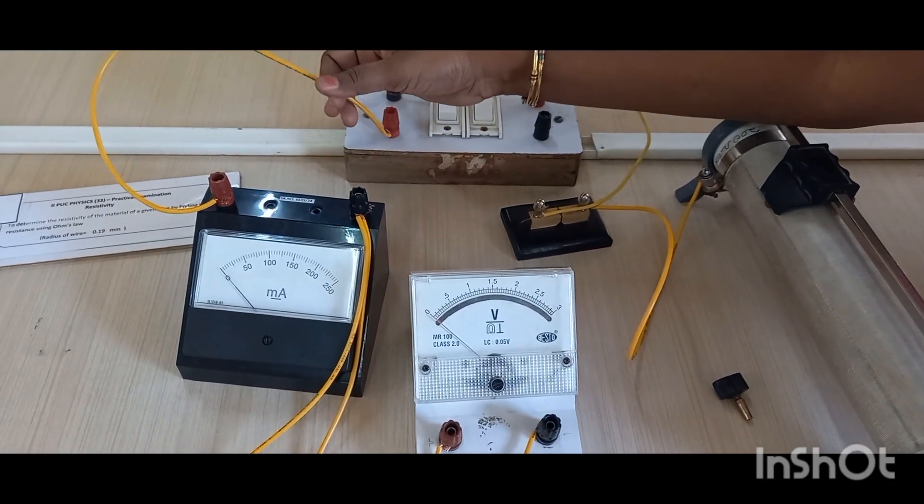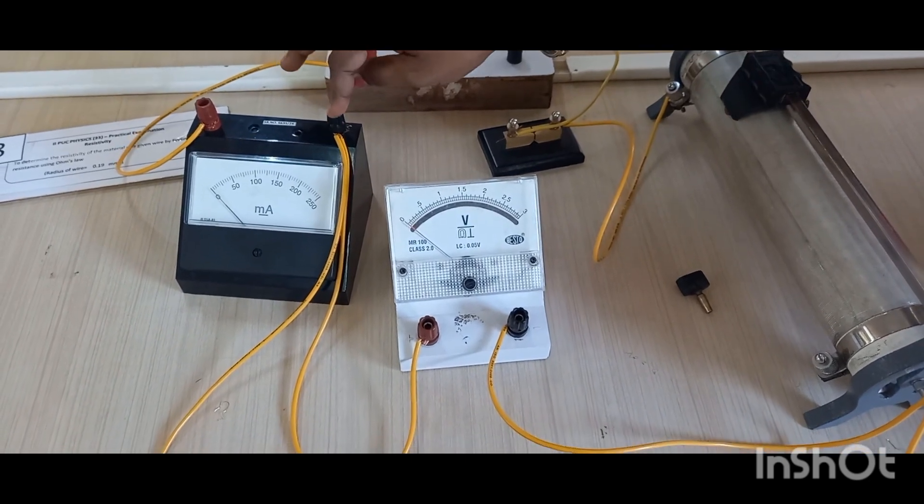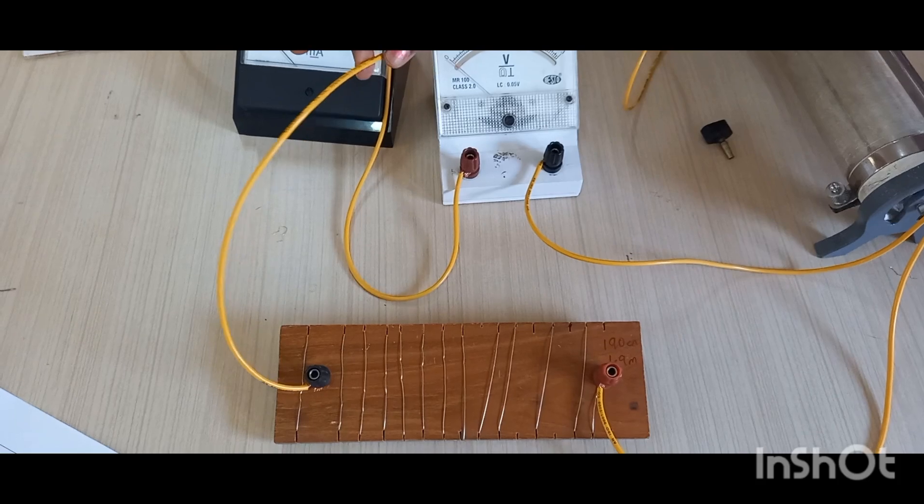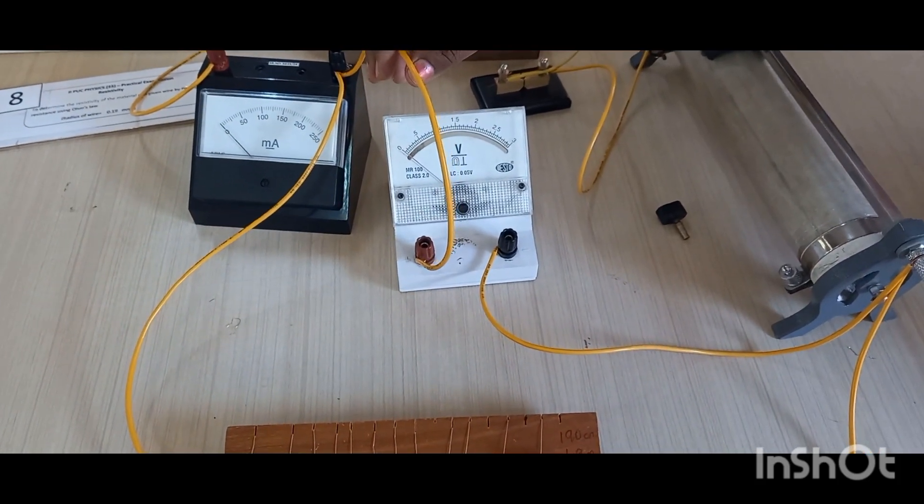So positive of the battery goes to positive of the milliammeter, then negative of the milliammeter. From here two connections are there. One goes to the unknown resistance coil and the other one goes to the positive of the voltmeter.